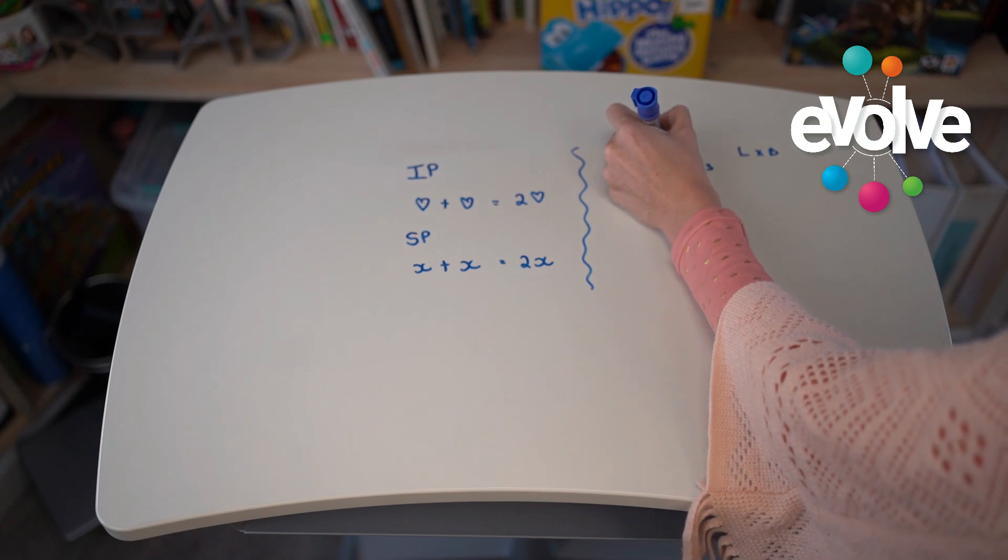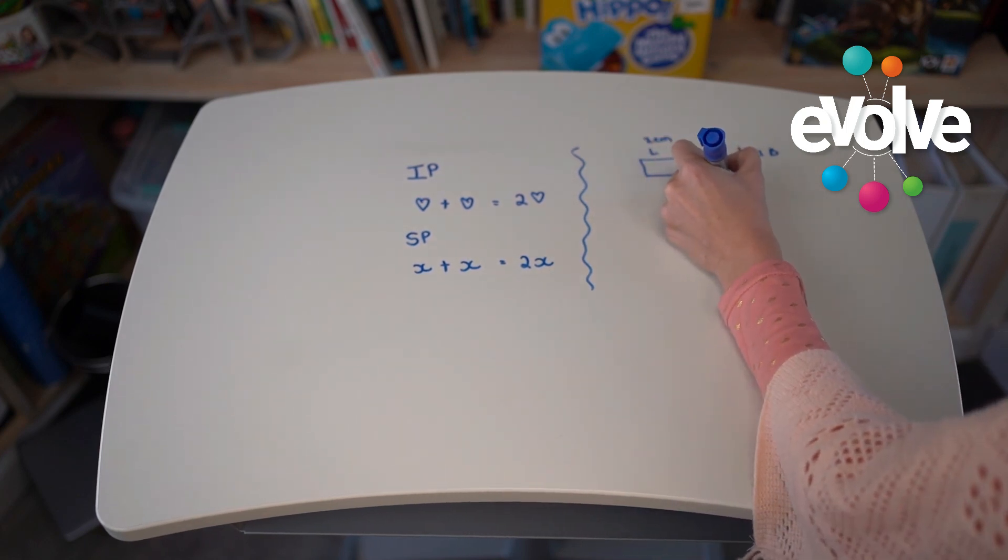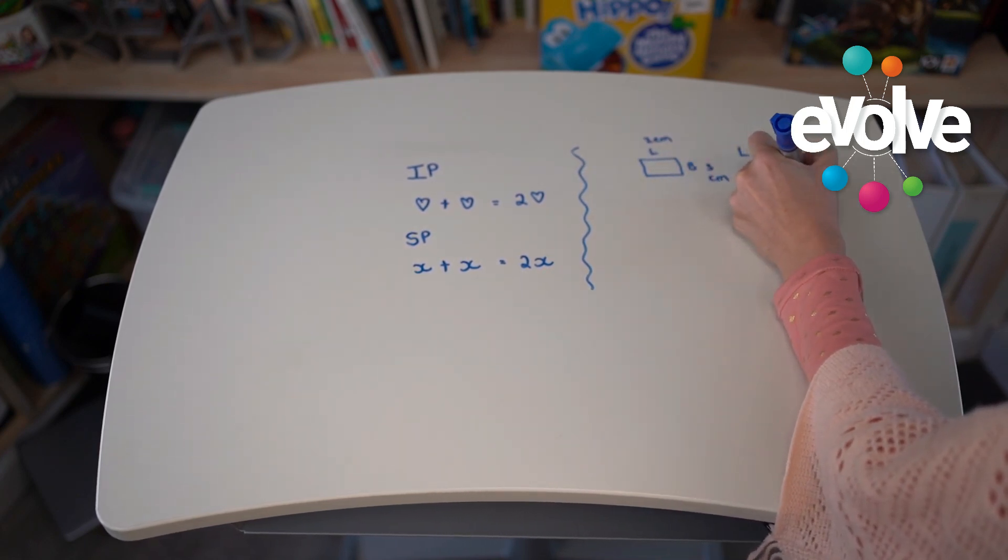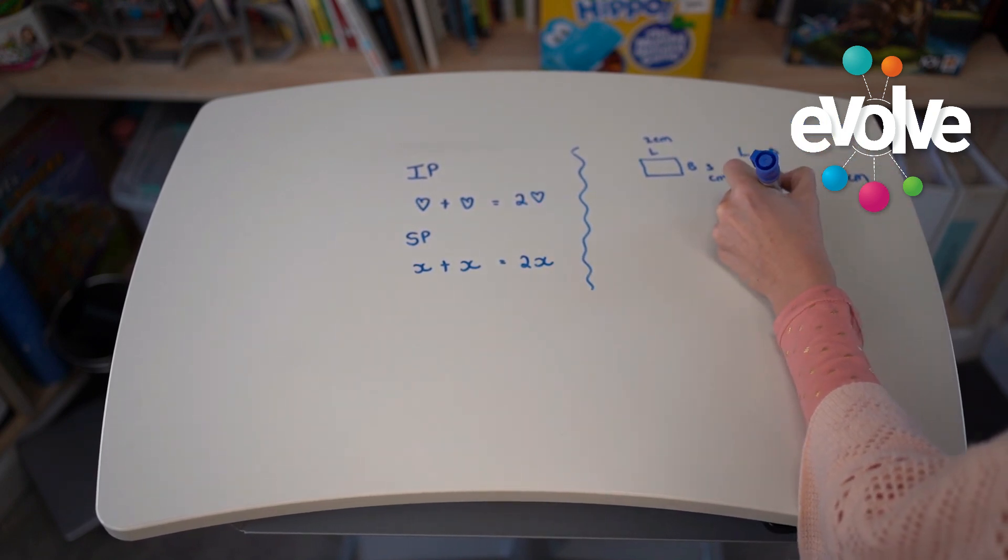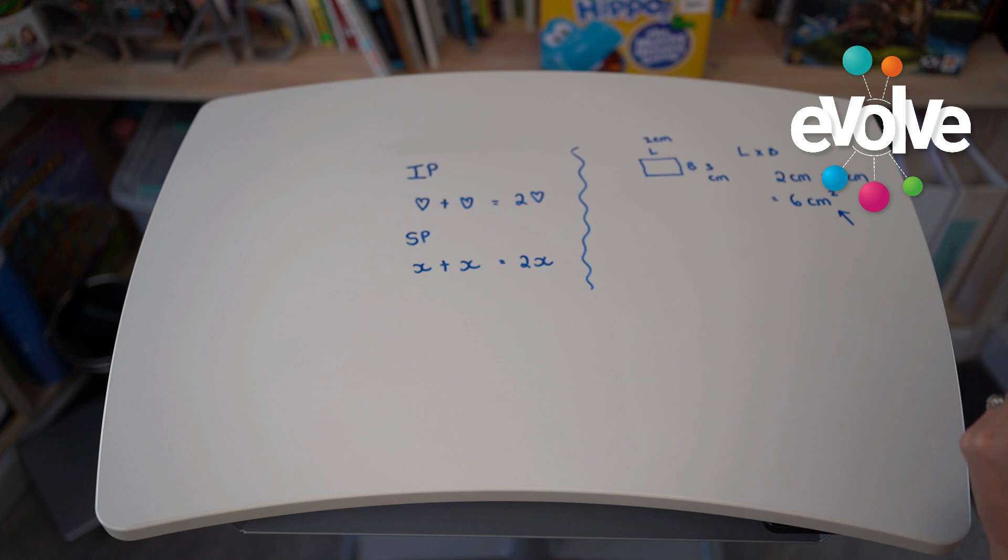...two and this is three centimeters. If I'm going to say two centimeters times three centimeters, we will say that it's six centimeters squared. But why do we actually put the unit as a square? Now this comes back into...